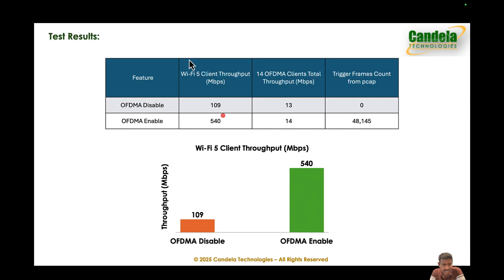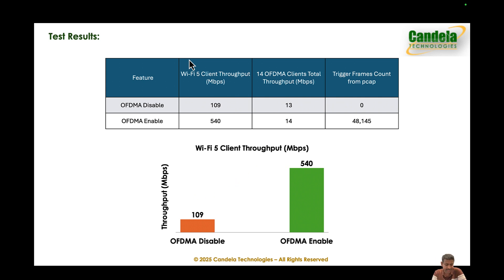Here is a summary of all results: OFDMA disabled gave about 110 Mbps, OFDMA enabled gave about 540 Mbps, and throughput to all OFDMA capable clients stays the same at 14 Mbps. This brings me to the end of the presentation. Hopefully you now have a good idea of how to measure OFDMA gains. We can put a full stop to the question of whether there is OFDMA gain — we do see significant OFDMA gains. Please don't try to look for this exact multiple of gain; when you repeat this test you might see lesser gain, but you will definitely see gains.